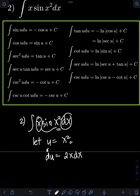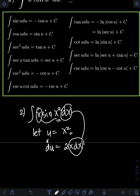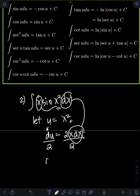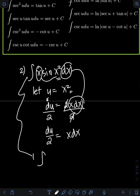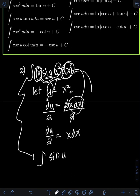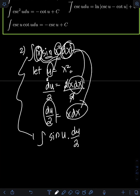We have this x dx term in the original integral. We just get rid of this extra coefficient of 2 by dividing both sides by 2, so we will have du over 2 is equal to x dx. Substituting, we will have the integral of sine of x squared, which is now equal to sine u, and this x dx is equal to du over 2. Since one-half is just a constant, I can just put it in front of the integral.